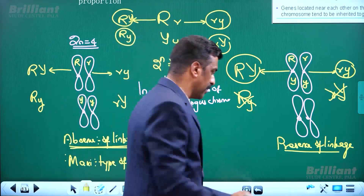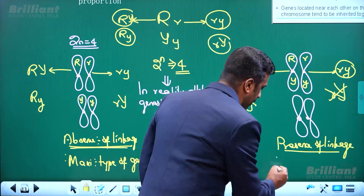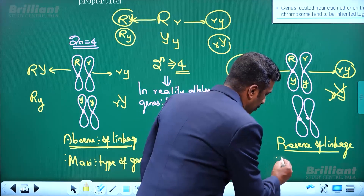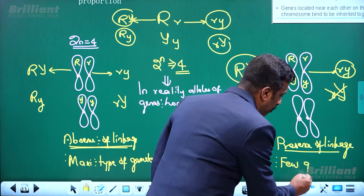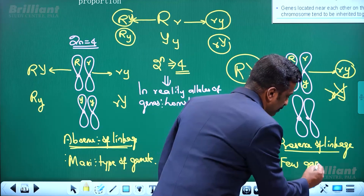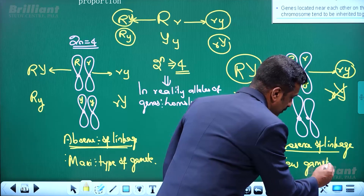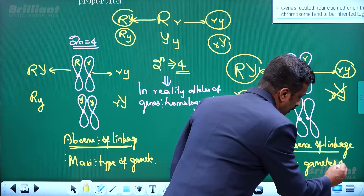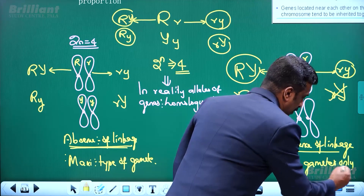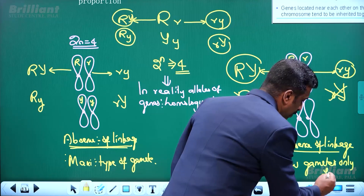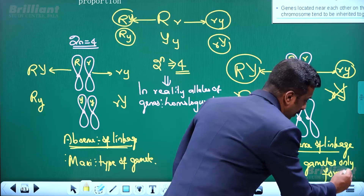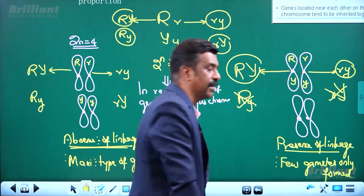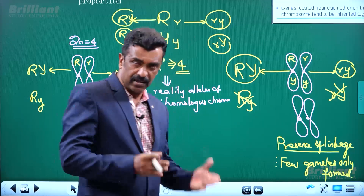So what is the first thing? Few gametes only form. Two raised to one answer: one genotype form, maximum type of gametes formed.